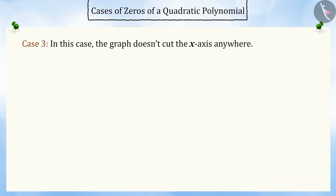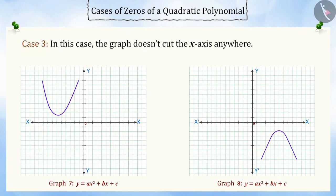Case 3: in this case, the graph does not cut the x-axis anywhere. The quadratic polynomial ax squared plus bx plus c will have no zeros.